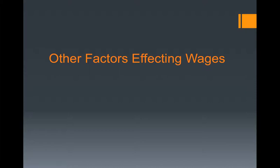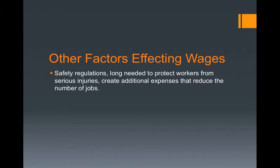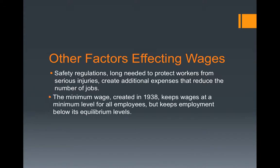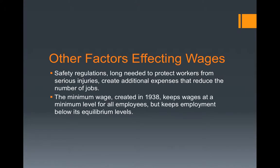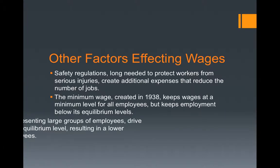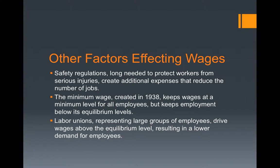Other factors affecting wages: safety regulations, long needed to protect workers from serious injuries, create additional expenses that reduce the number of jobs. The minimum wage, created in 1938, keeps wages at a minimum level for all employees but keeps employment below its equilibrium levels. Labor unions, representing large groups of employees, drive wages above the equilibrium wage, resulting in a lower demand for employees.